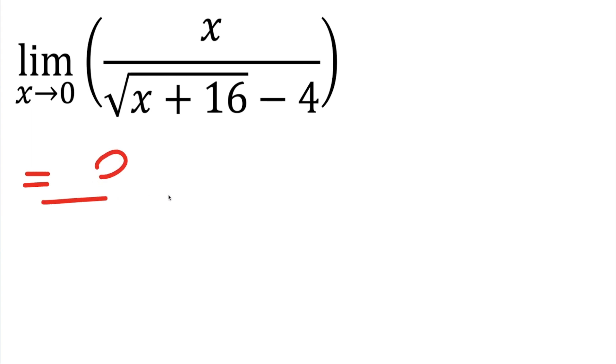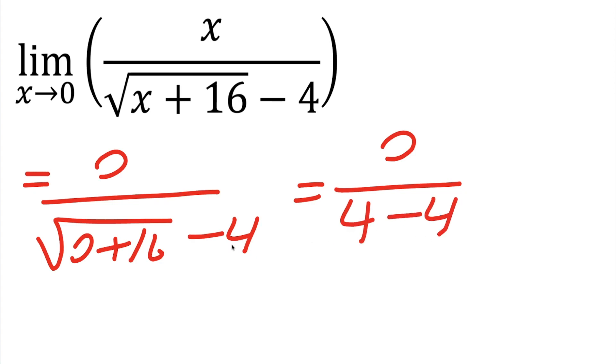I get a 0 for the numerator divided by the square root of 0 plus 16 minus 4. So the numerator is 0 divided by, so 0 plus 16 is 16, and the square root of 16 is 4, and we get 4 minus 4, this piece right here,